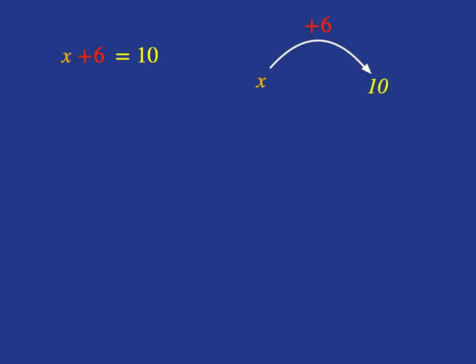To get back to x, which is what we're trying to do when we solve an equation, work out what x is, so we just want to get back to x on its own, what we need to do is the inverse operation, which is subtract 6.